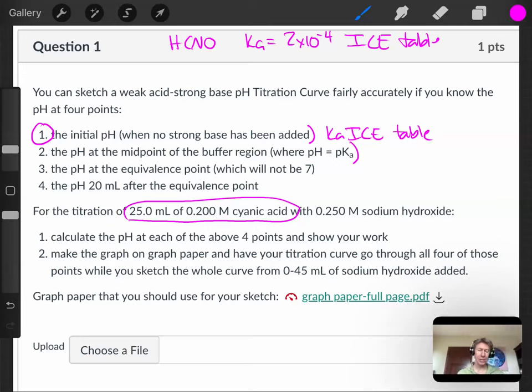And you're going to solve for the concentration of hydronium and then find the pH. Because the only thing you have is the weak acid. You haven't added any strong base to it yet.